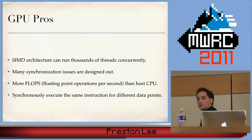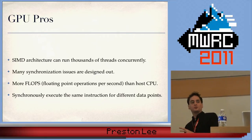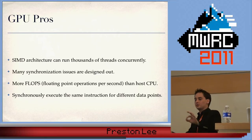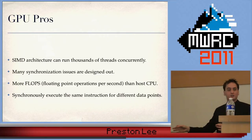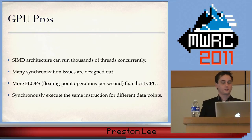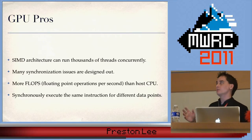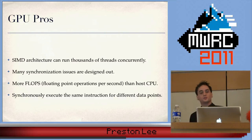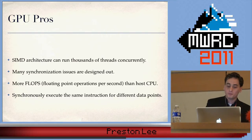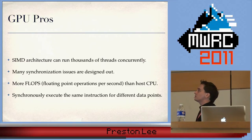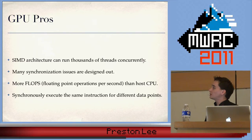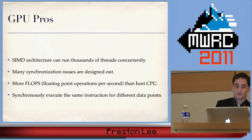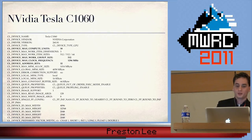GPU pros: the SIMD architecture — the ability to execute a single instruction across multiple data points simultaneously — means you can come up with thousands of threads. Synchronization issues are sometimes designed out, sometimes not, depending on the type of calculation you're trying to do. Much of the time we have more floating point operations available than the CPU, despite a different clock rate.